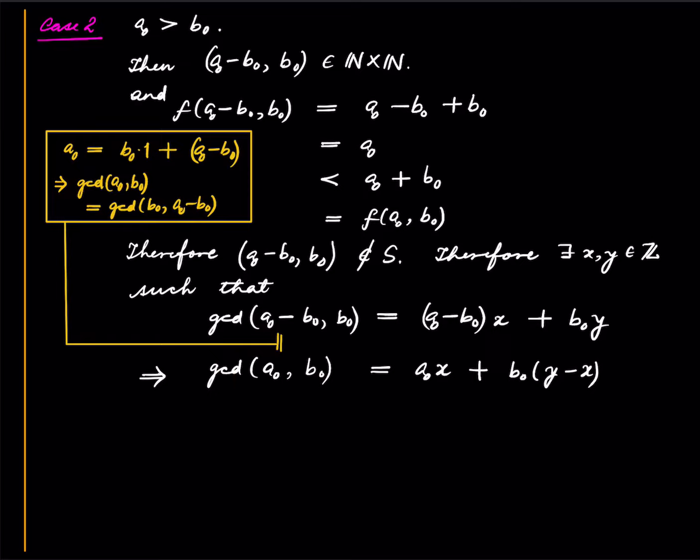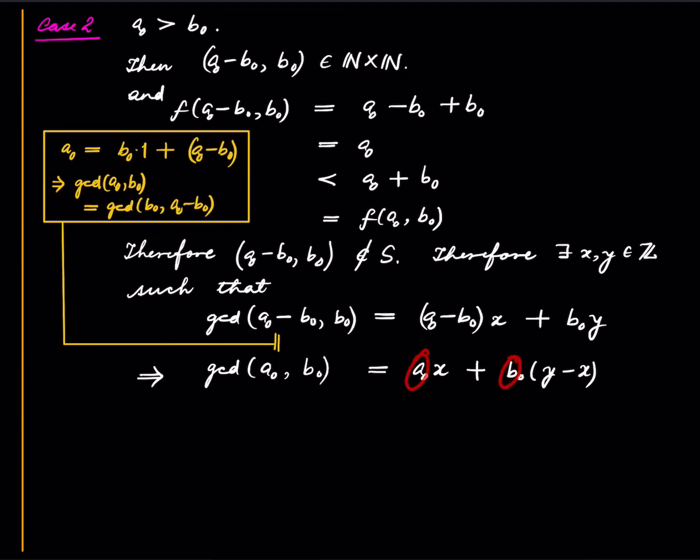So this is the reason. But now if you look at this equation, this says that GCD of A0 comma B0 can indeed be written as integer linear combination of A0 and B0. But this contradicts the fact that, basically this implies that A0 comma B0 is actually not in S, which contradicts the fact that A0 comma B0 is in S. So this is a contradiction.